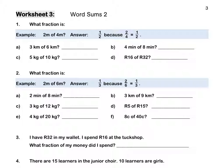Word Sums 2. Question 1. What fraction is 2 metres of 4 metres? It's a half, because 2 out of 4 is equal to a half. What fraction is 3 kilometres of 6 kilometres? It's 3 out of 6, or in simplest form, one half.